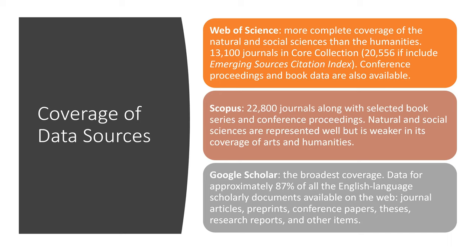Scopus has more than 22,000 journals along with selected book series and conference proceedings. Natural and social sciences are well represented, but it is weaker in arts and humanities.